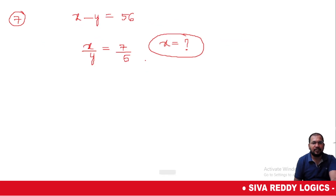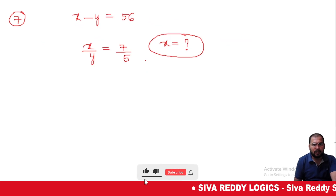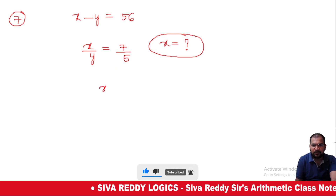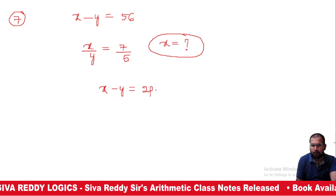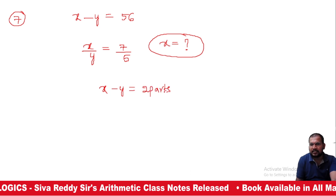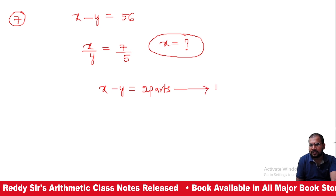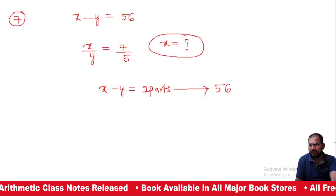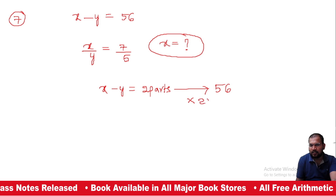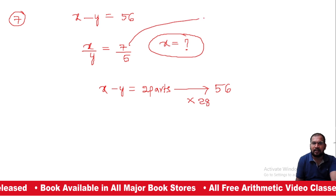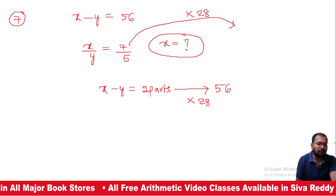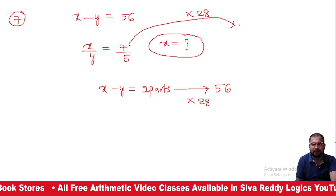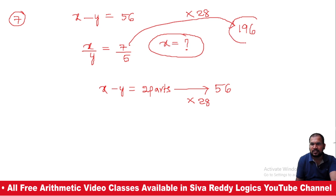x minus y is equal to 56 and x by y is equal to 7 by 5. Then the x value is what? x : y means 7 parts and 5 parts. The gap is 2 parts. 2 parts equals 56, so each part is 28. x value is 7 parts, 7 × 28 = 196. So the answer is 196.